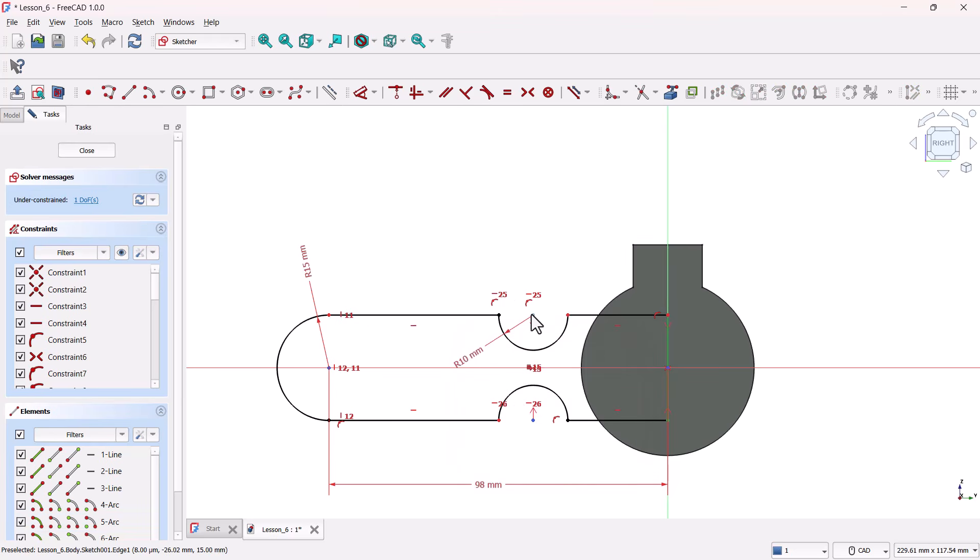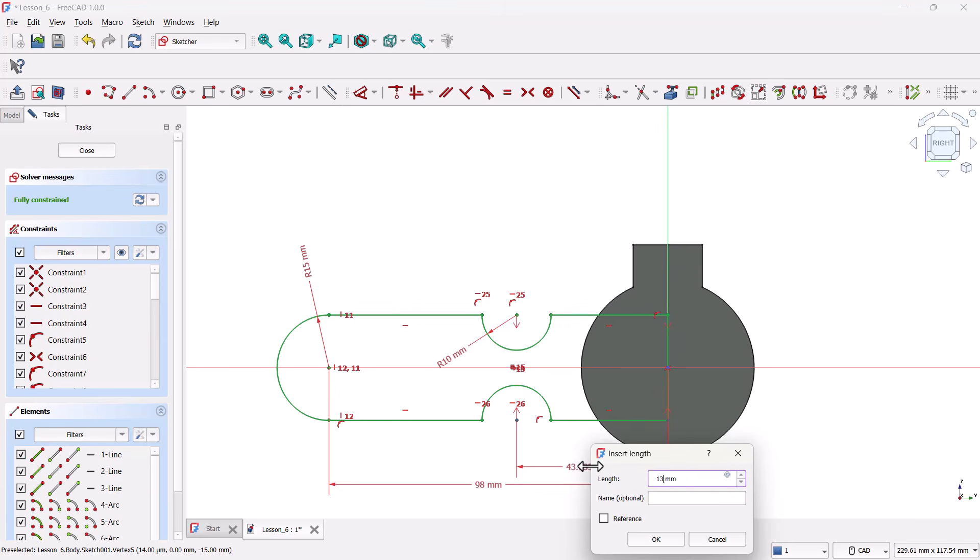The position isn't fixed yet. If we drag it, it still moves around. To lock it down, we'll use the dimension tool. Select the center point of the circle and the origin point of the sketch. Let's key in 13 millimeters.